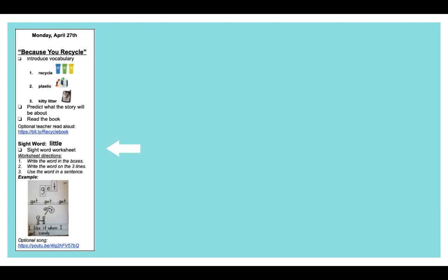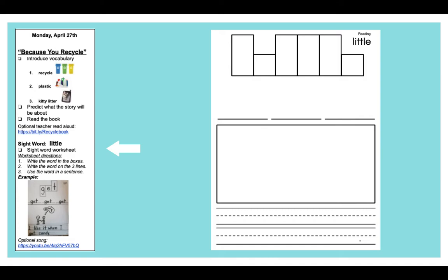The next thing we're going to be doing today is talking about a new sight word. Our new sight word is the word little. Little is the longest sight word that we've learned so far in kindergarten. It has six letters. Let's try to spell it together if you can. L-I-T-T-L-E.